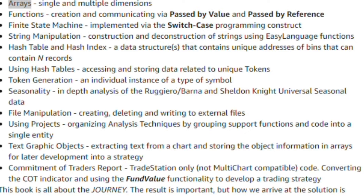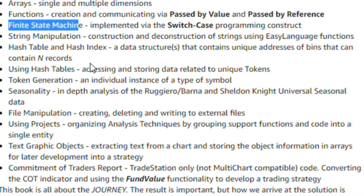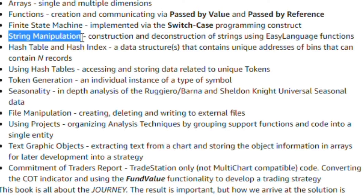We discuss functions at great length — the creation of the function and how you can communicate to a function, either by passing variables by value or by reference. One of my favorite pattern recognition tools is the finite state machine, which we include in this book in quite a bit of detail. String manipulation is so important because you can do so many things by representing symbols as strings and constructing and deconstructing them to get the information you need.